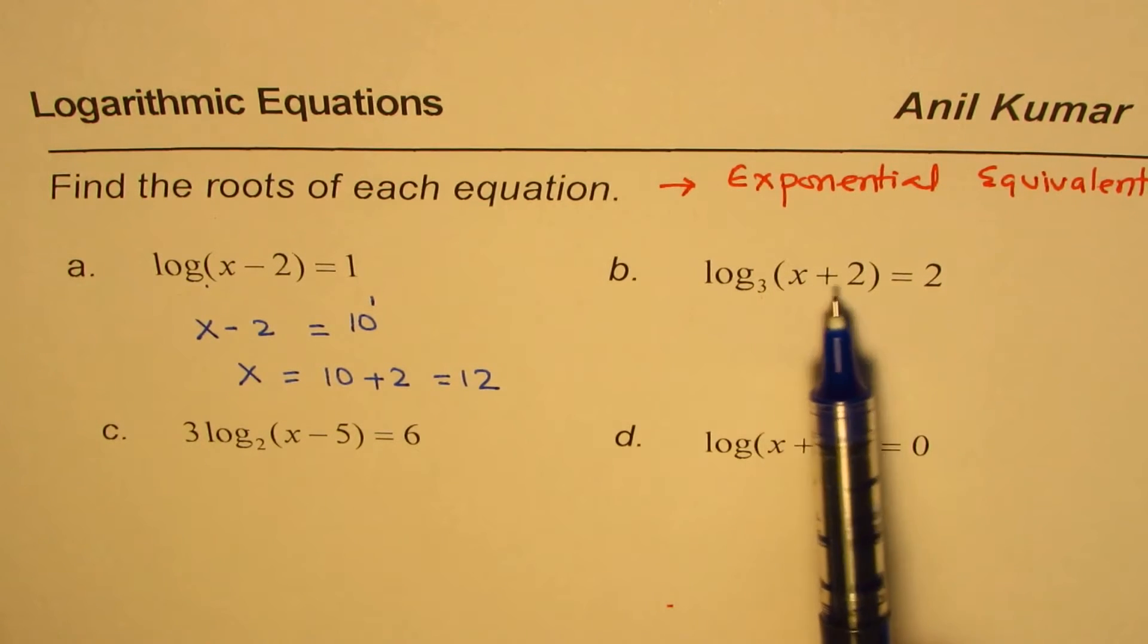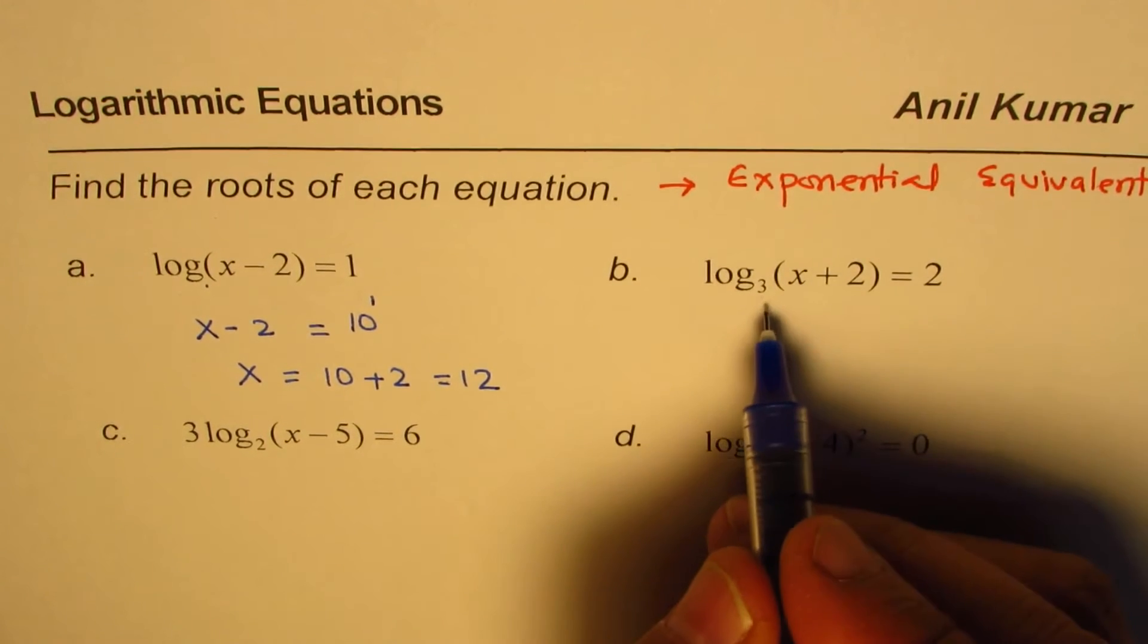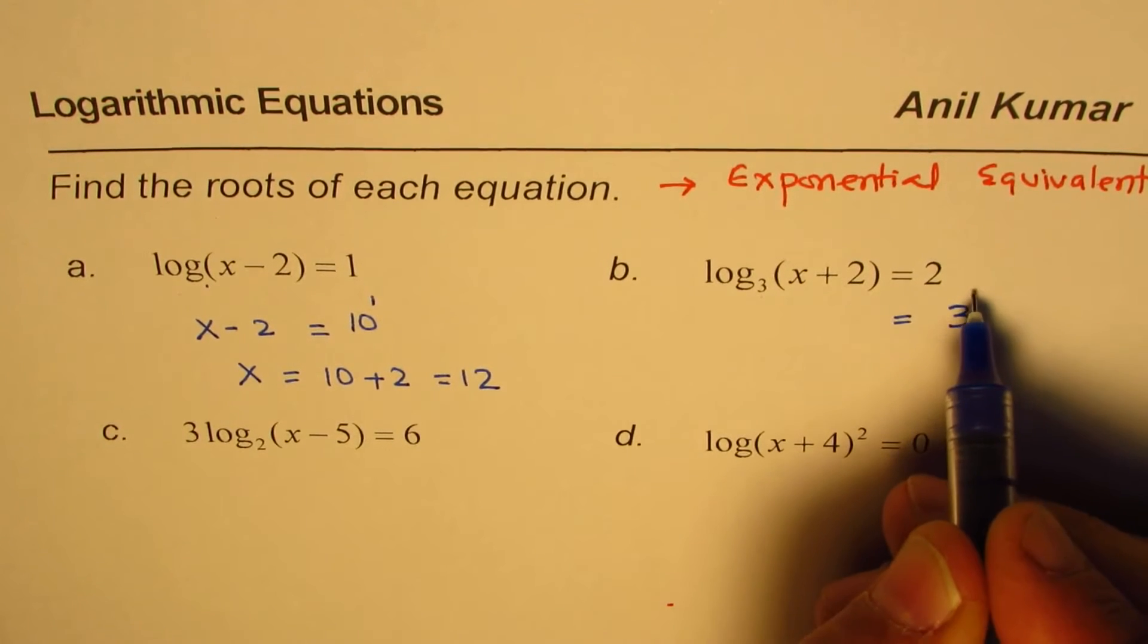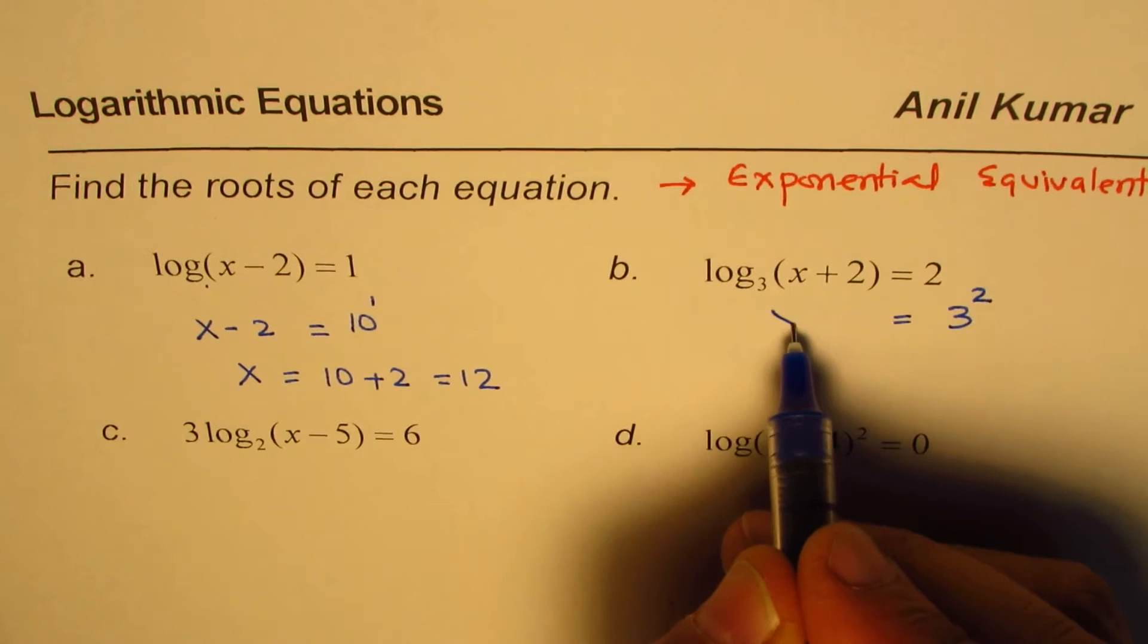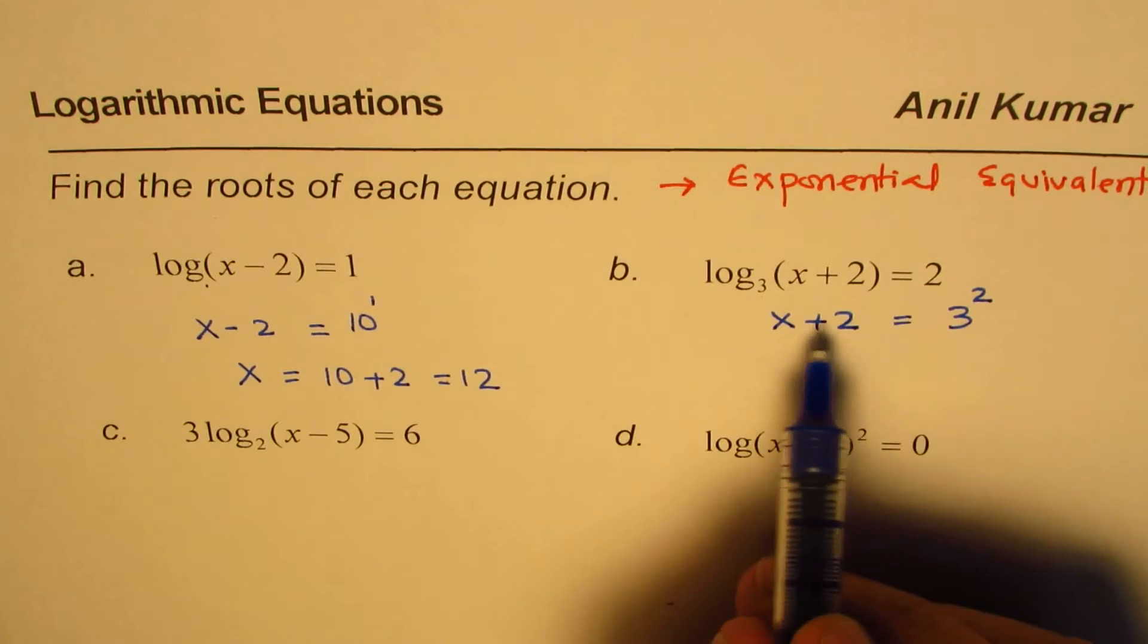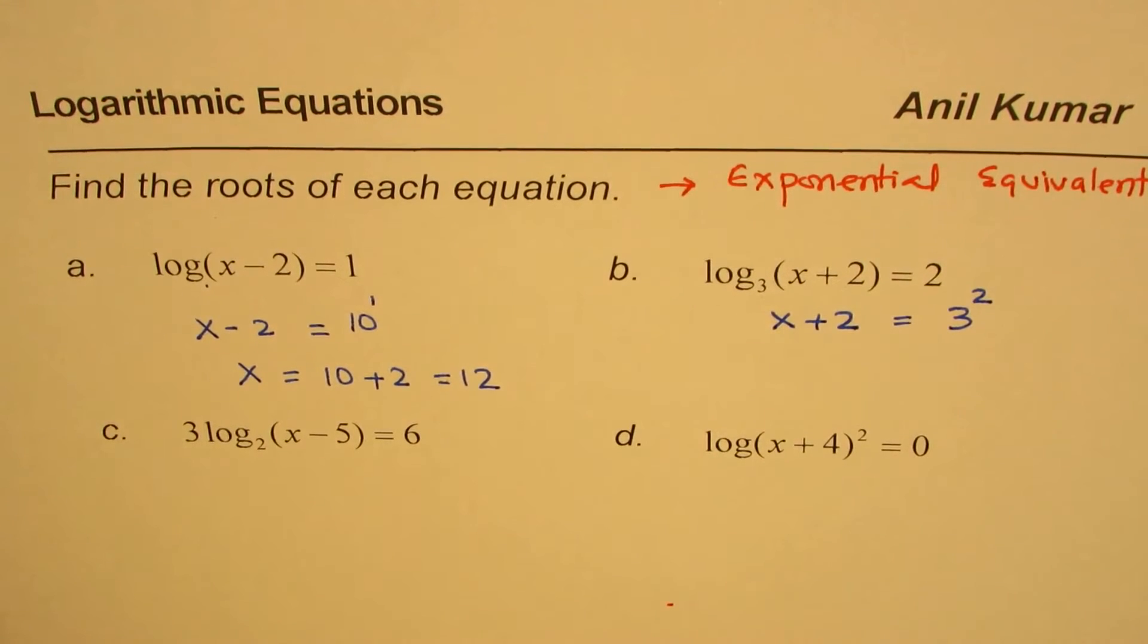Log to the base 3 of x plus 2 is 2. So 3 goes there. It becomes equal to 3 squared. Do you see that? And here we are left with x plus 2.